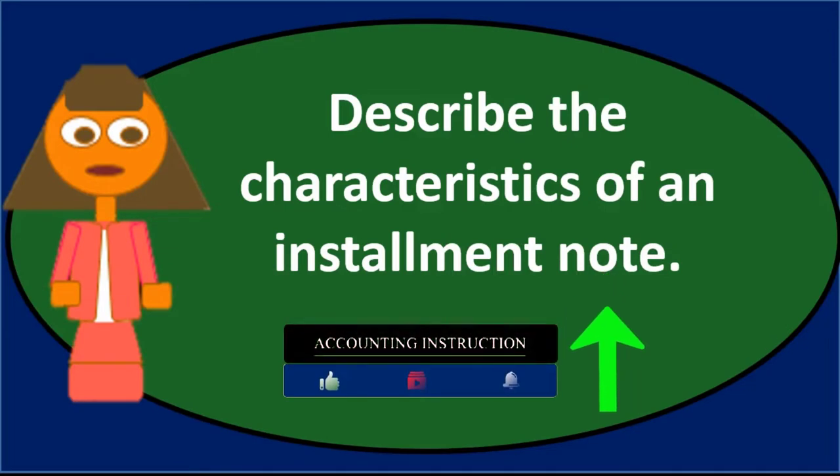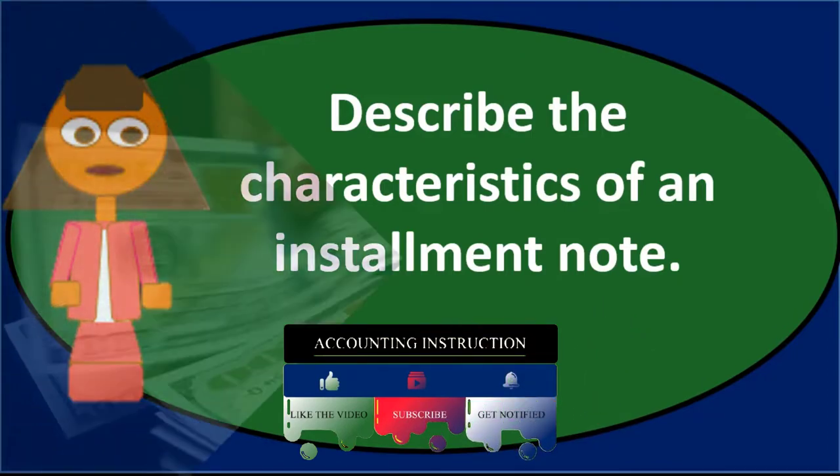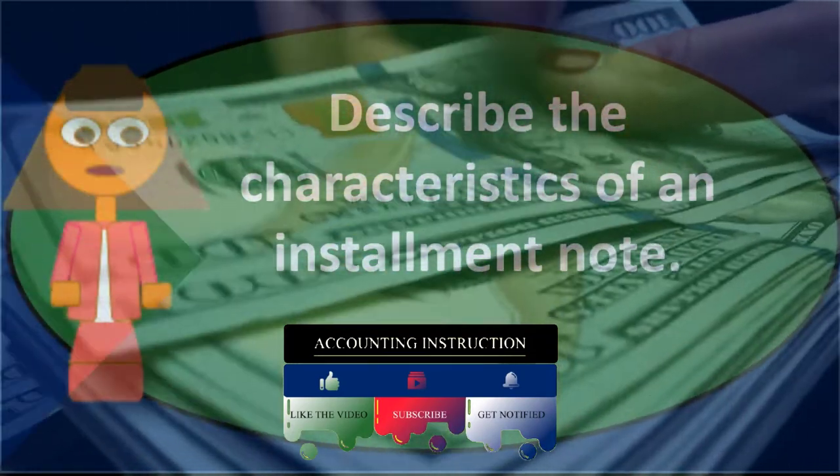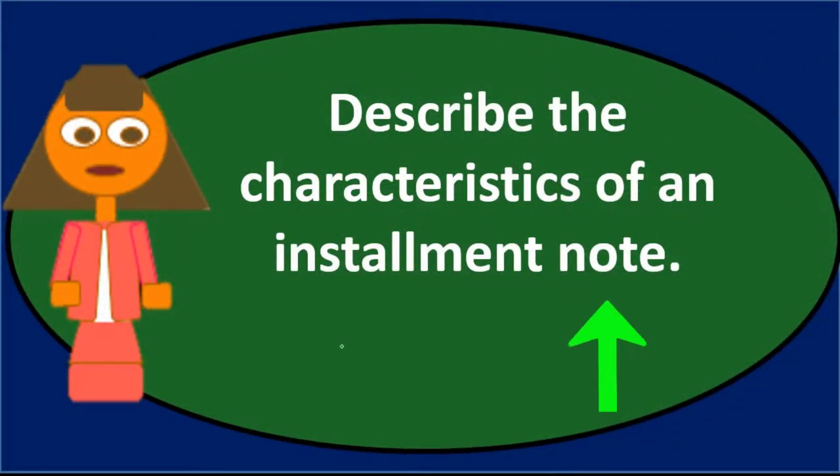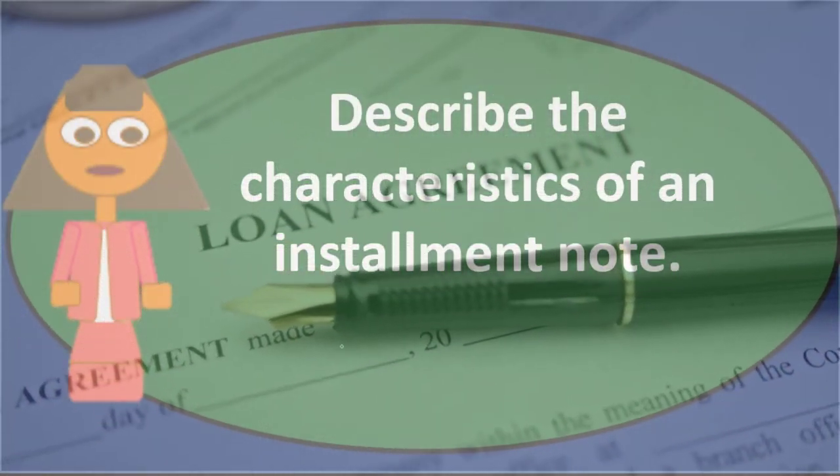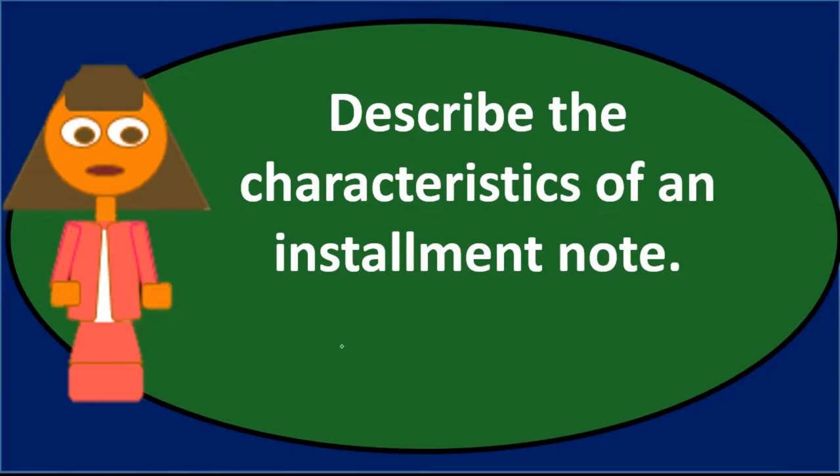A note is some type of promise to pay. When we take a loan typically from the bank, we're trying to finance the company. For taking out a $100,000 loan, we're going to get the $100,000 cash and credit the note payable. We're typically going to have some type of contract requiring the promise of repayment of the note along with interest. To get a loan, we're going to sign a promise to pay back both the principal and the interest.